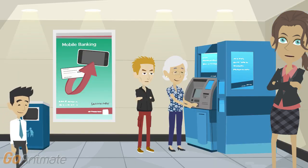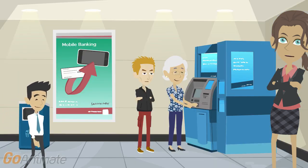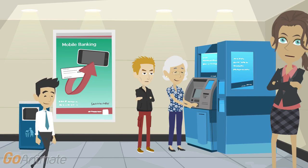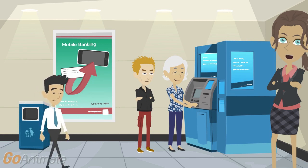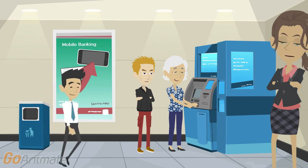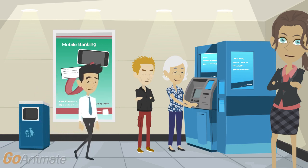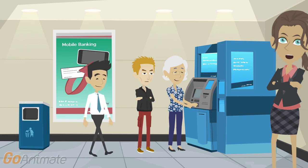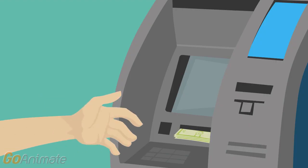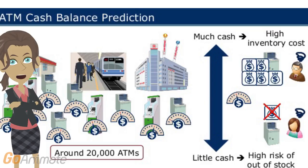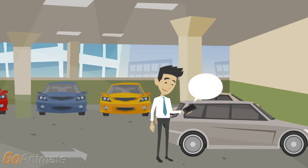Before leaving for home, Vijay goes to an ATM to withdraw money. He visits this ATM, which is within his office. Although it's high usage, it's never out of cash. This is because the bank uses a machine learning algorithm to predict expected cash withdrawals by measuring the supply and demand.